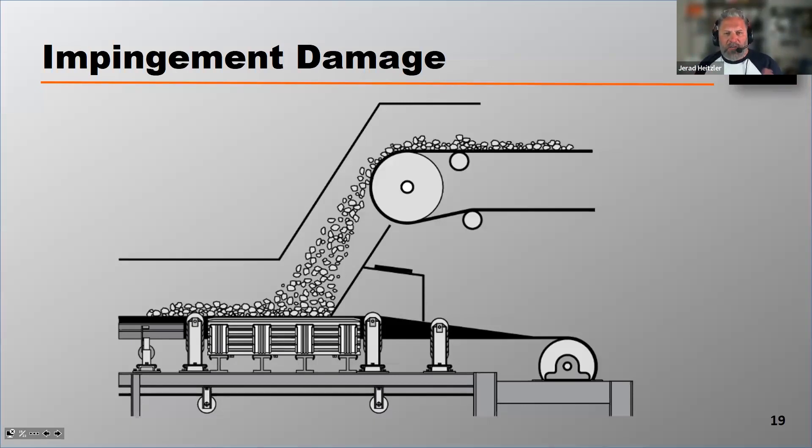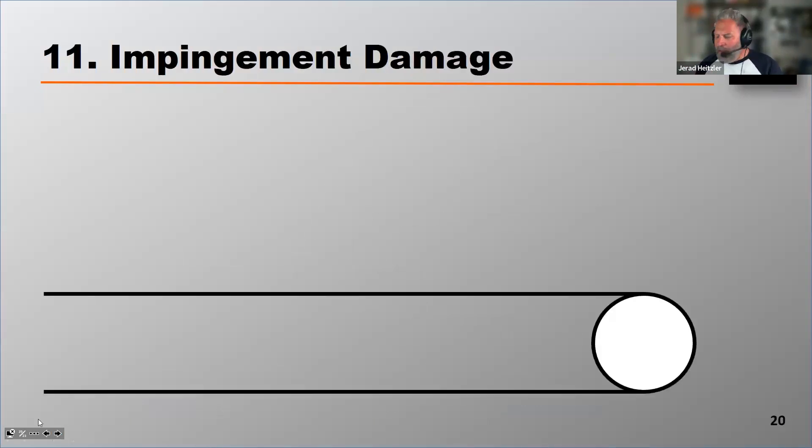Here's how impingement damage can be prevented. If I was going to drop material straight down onto this belt as it comes onto belt B, we'll call this B, it's settling, it's rotating, and it's causing impingement damage.